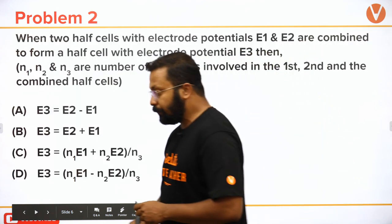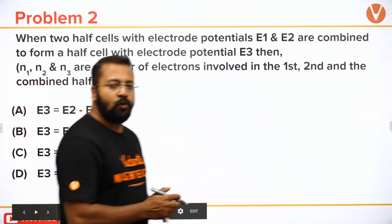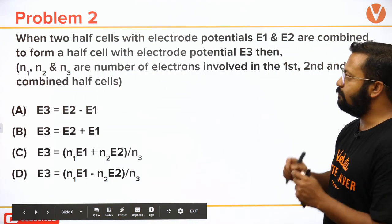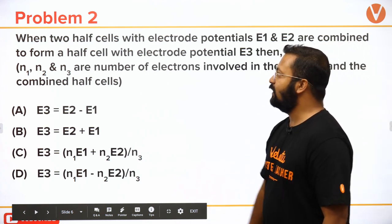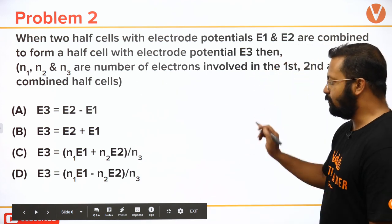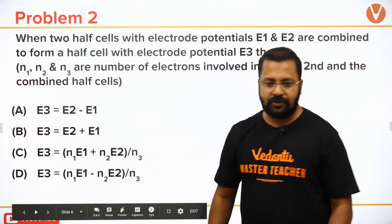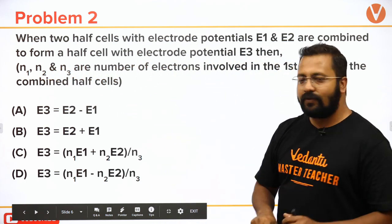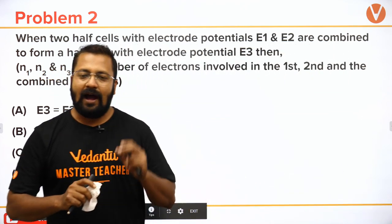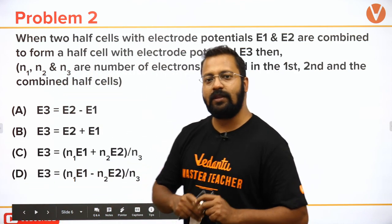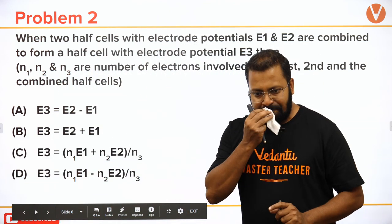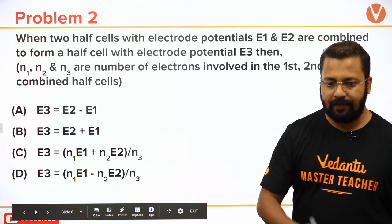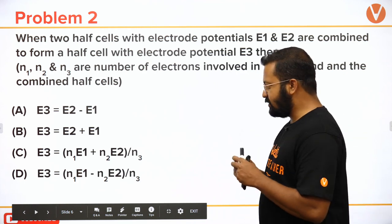Let's move on to the next question. When two half cells with electrode potentials E1 and E2 are combined to form a half cell with electrode potential E3, which of the following options is correct? N1, N2, N3 are the number of electrons exchanged in each half cell. What is your answer?